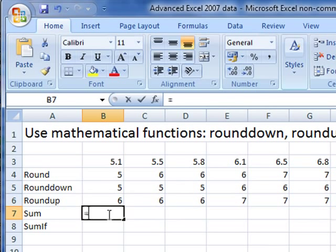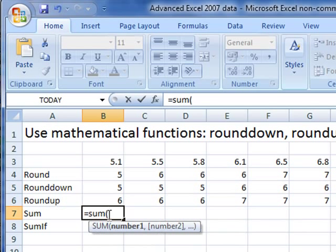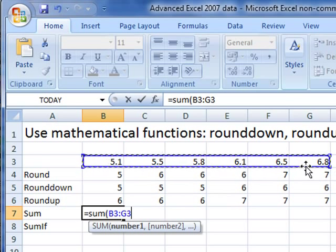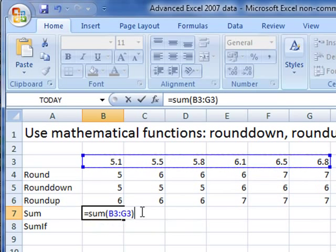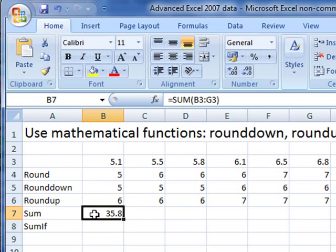Hopefully you know what sum does. Equals sum, open brackets. I want to add up this row of numbers. So B3 to G3. Close. I'm not going to go into that. You should know how to do that.